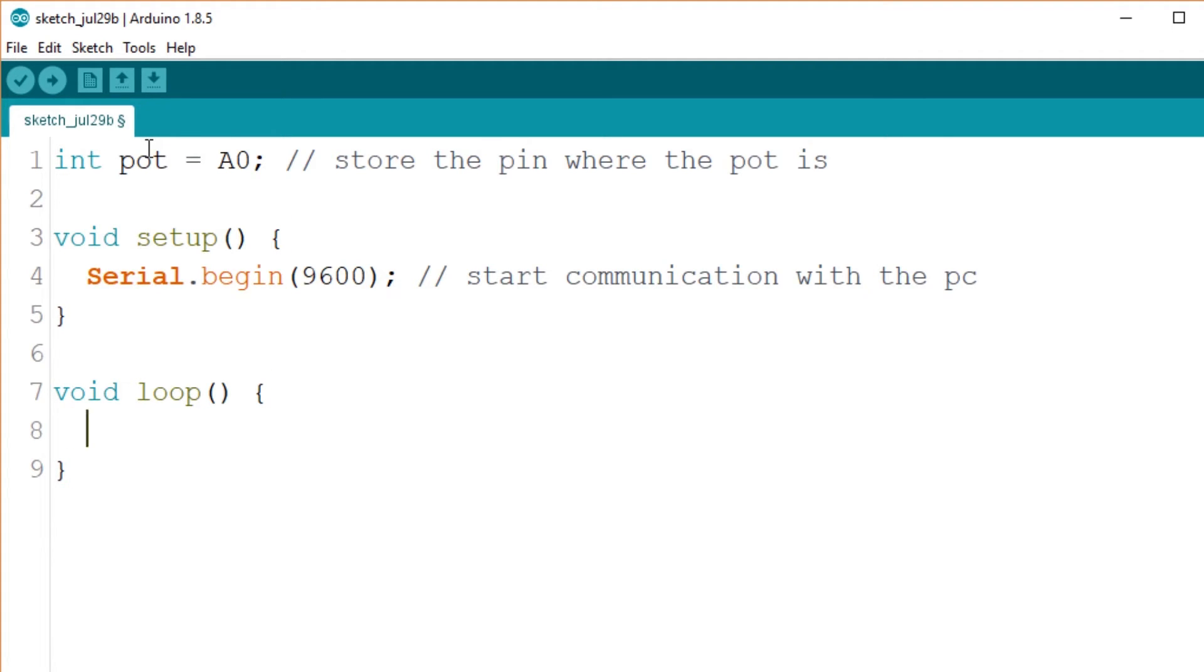In the loop function, we want to read the value of the ADC each iteration and then print it to the screen. Use the analog read function and indicate which pin to read. Ours is stored in the pot variable.